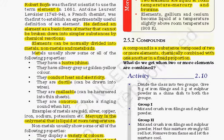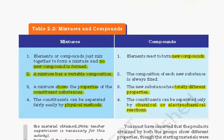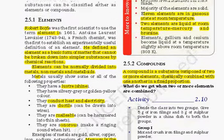Non-metals show properties like various colors, poor conduction of heat and electricity, they are not lustrous, not sonorous, and not malleable. Examples include hydrogen, oxygen, bromine, and chlorine. Elements with intermediate properties between metals and non-metals are called metalloids.